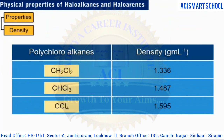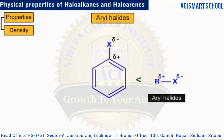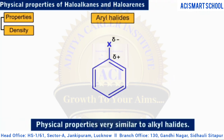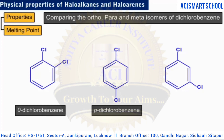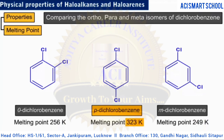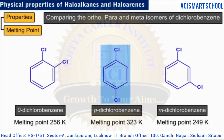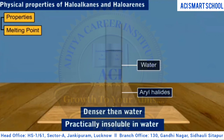Increasing the number of halogen atoms increases the density of the compounds. Aryl halides are polar molecules due to the presence of a polar carbon-halogen bond, but they are less polar than alkyl halides, and their physical properties are very similar to those of alkyl halides. Regarding the isomers of dihalobenzenes: comparing the ortho, meta, and para isomers of dichlorobenzene, their boiling points are nearly the same. However, the para isomers have higher melting points because the greater symmetry of para isomers fits better into the crystal lattice.